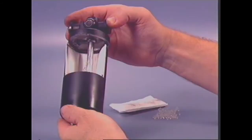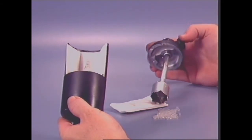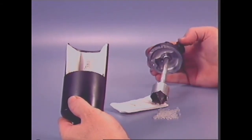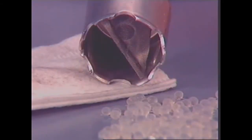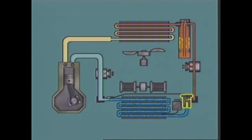The receiver dryer acts as a storage volume for liquid refrigerant and also contains a filter and desiccant or drying material. The liquid refrigerant must pass through the filter and desiccant to reach the pickup tube, where the refrigerant can flow on to the TX valve.